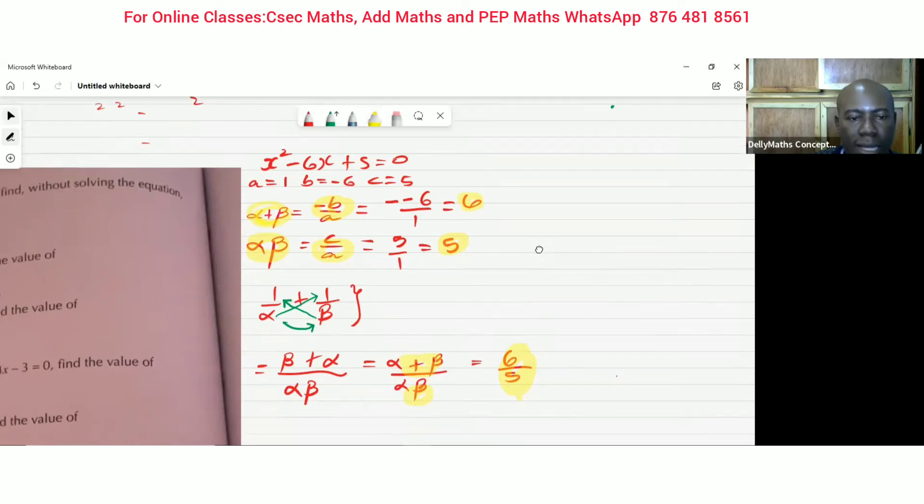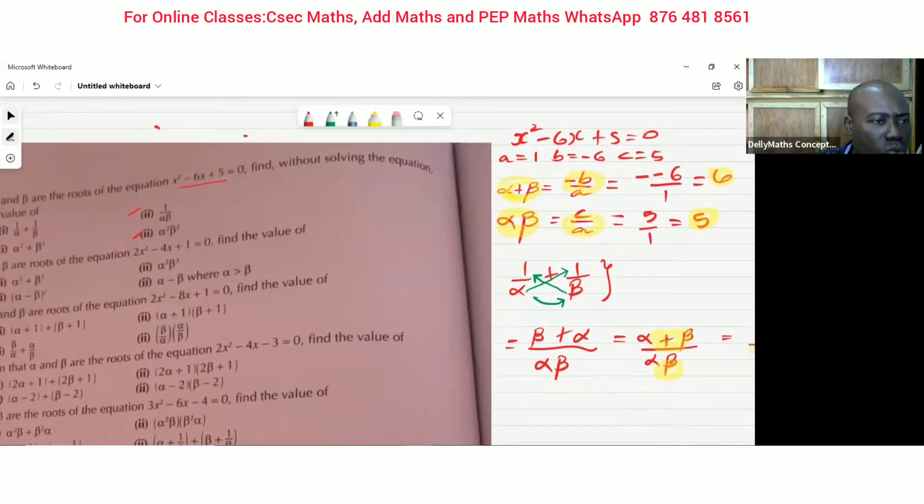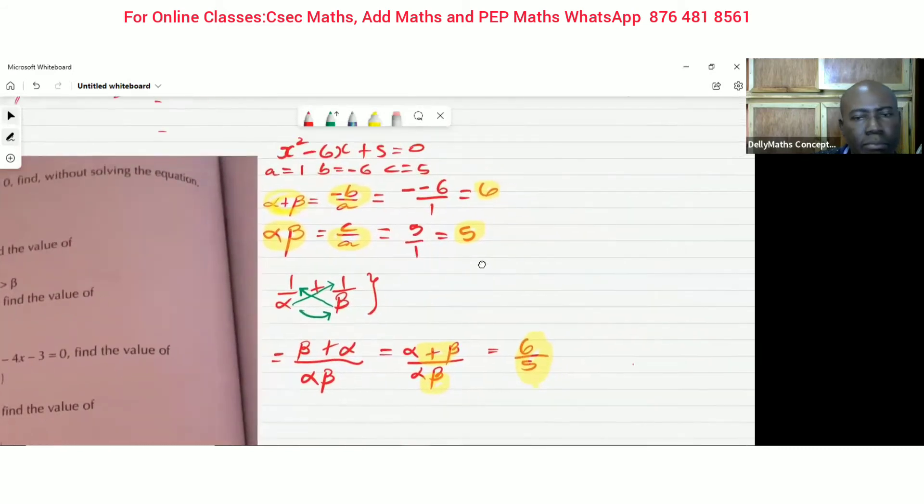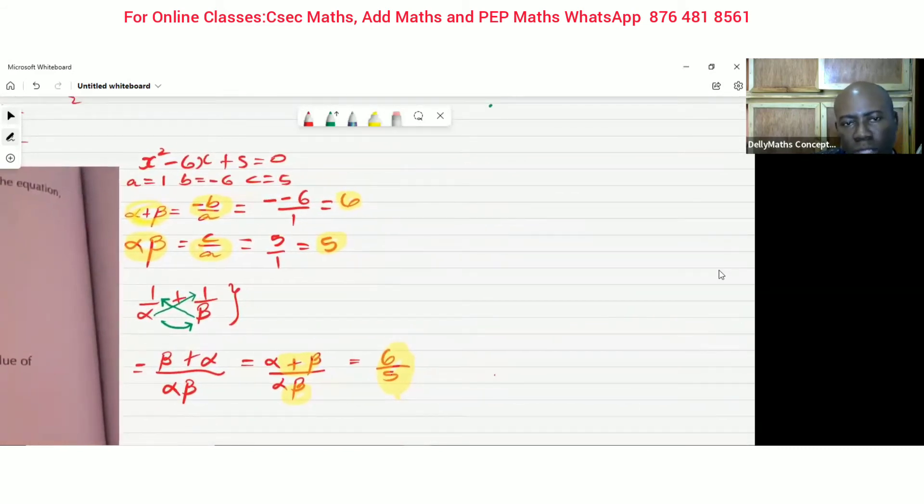Let's look at the other one. The other one says one over alpha beta. So the second one, which is part B, part B says, let us evaluate one over alpha beta. Well, this one will be quite easy because already we got this in a product form. And all they want us to do is to put one over the product. The product is five. So you could see five is there and one is there, and that's the answer. So this one is quite easily done. Very nice and easy.